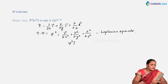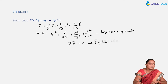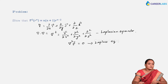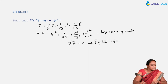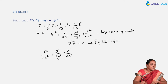If this del squared operator on f is equivalent to 0, this equation is nothing but the Laplace equation: ∂²f/∂x² + ∂²f/∂y² + ∂²f/∂z² = 0. Now we are going to find del squared r^n. So del squared r^n is nothing but (∂²/∂x² + ∂²/∂y² + ∂²/∂z²) operated on r^n.